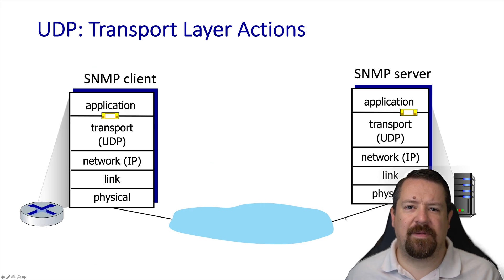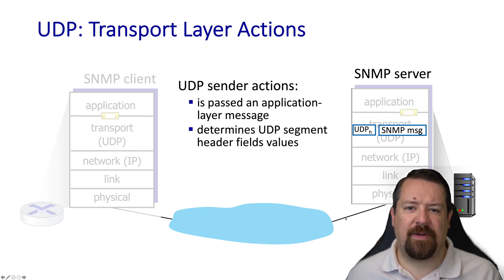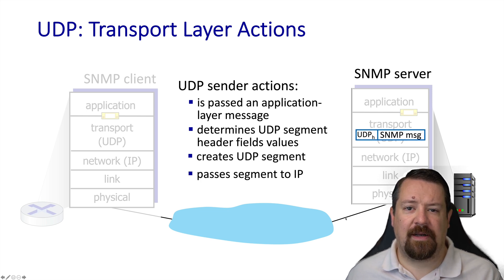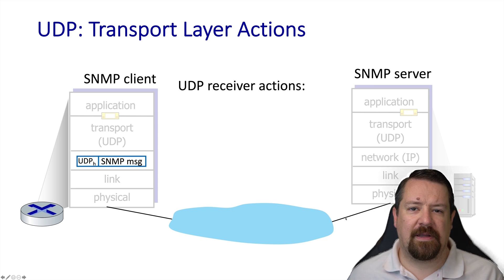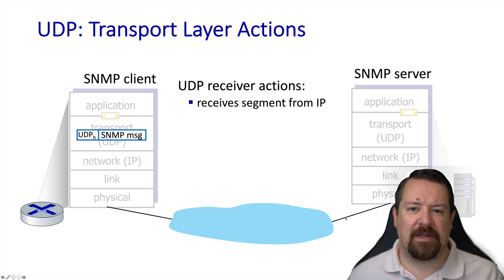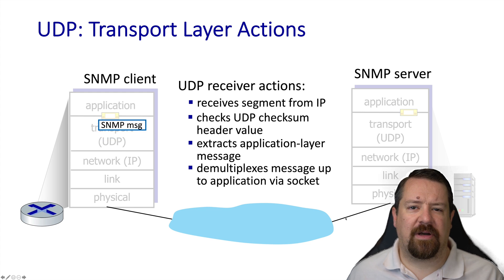Here's an example using the SNMP protocol to send messages over UDP. On the sender side, UDP receives a message from the application, adds the UDP header fields, combines that all into a segment, which it passes to the network layer, and allows IP to do its job creating a packet and sending it over the network. Then on the receiver side, the IP layer removes its header and passes the message up to the UDP layer. UDP receives the segment from IP and checks the checksum to make sure that the message hasn't gotten corrupted along the way. If the checks pass, it extracts the application message and delivers it to the correct socket.